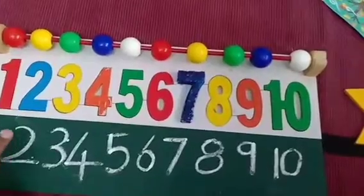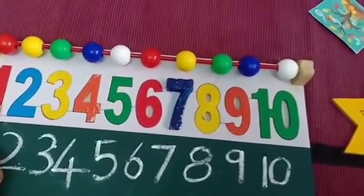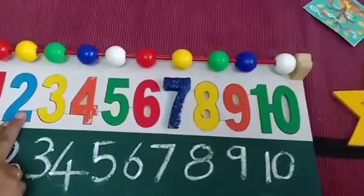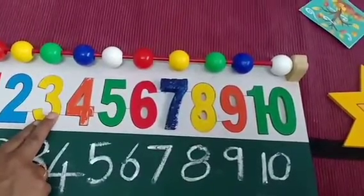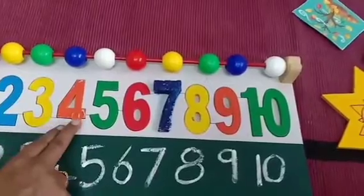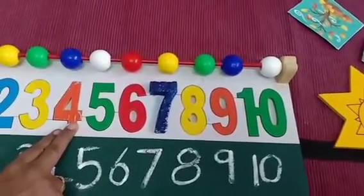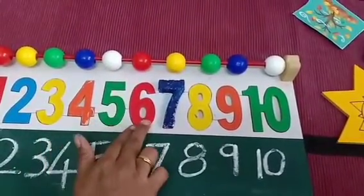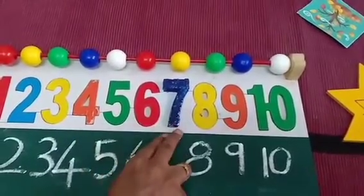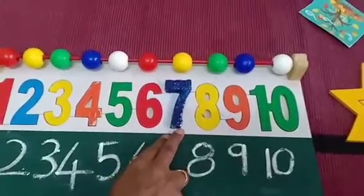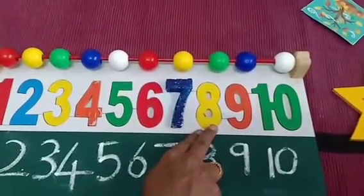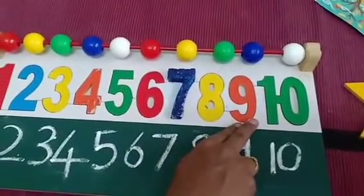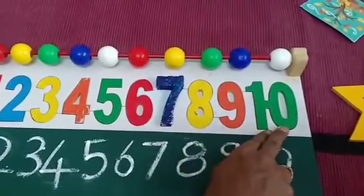Shall we recall the numbers? One represents sun. Two represents eyes. Three represents triangle. Four represents seasons. Five represents fingers. Six represents tastes. Seven represents rainbow. Eight represents octopus arms. Nine represents planets. Ten represents hen.